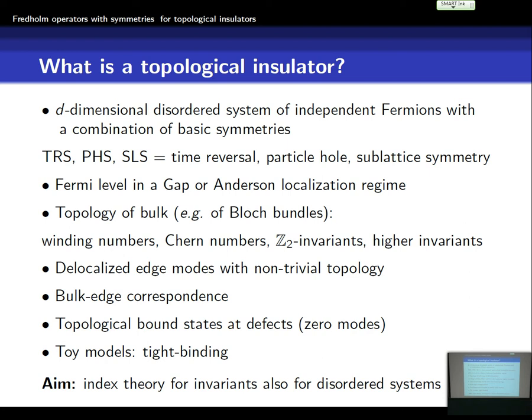Topology is typically first described in the bulk of the system, so in the system without any boundaries. The topology we're interested in are winding numbers, Chern numbers, and also Z2 invariants, which already came out in yesterday's talk, and there are higher invariants as well. What physically goes along with this non-trivial topology is that you have, on the boundaries of such systems, delocalized modes, quantum waves, which are extremely stable with respect to perturbation. That's the remarkable feature of these systems and also the materials associated with them.